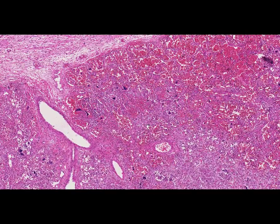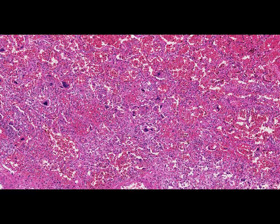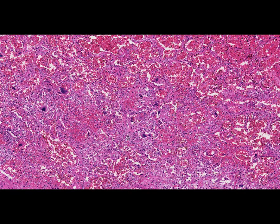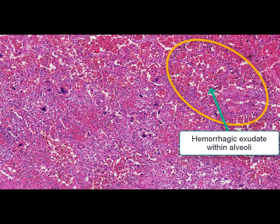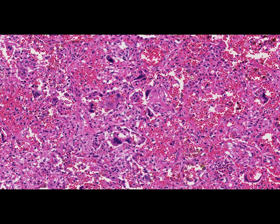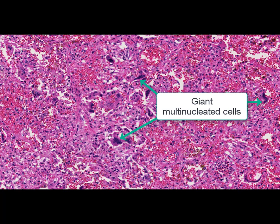At high magnification the alveoli are filled with a hemorrhagic exudate rich in erythrocytes. We can also find lymphocytes, macrophages, and some other cells there. The presence of giant multinucleated cells is another peculiarity that can be seen on this slide.